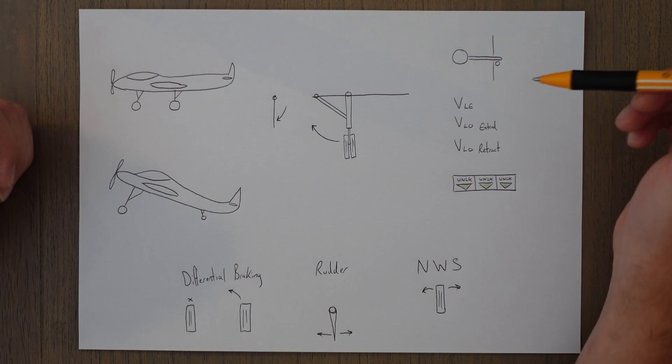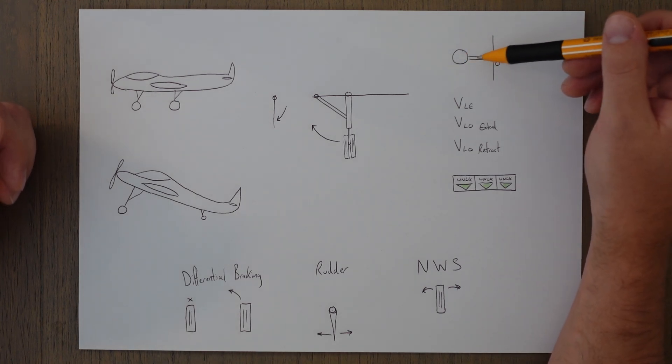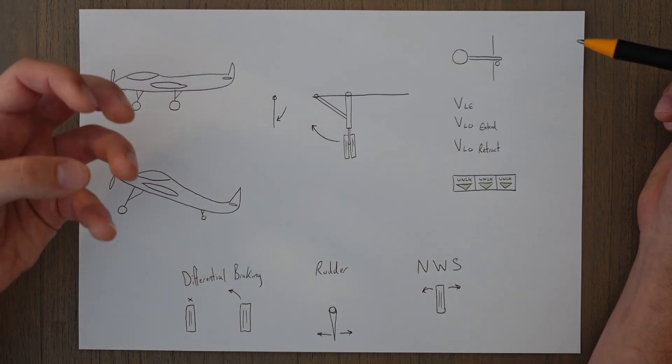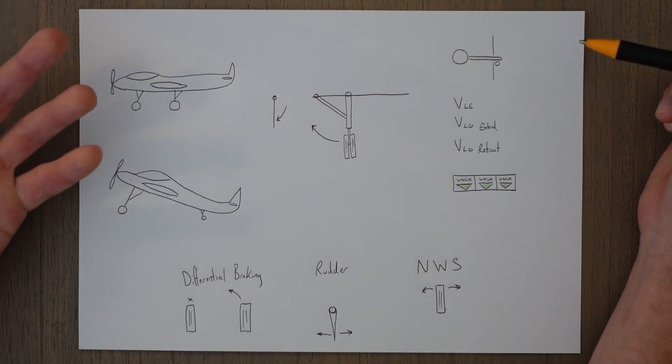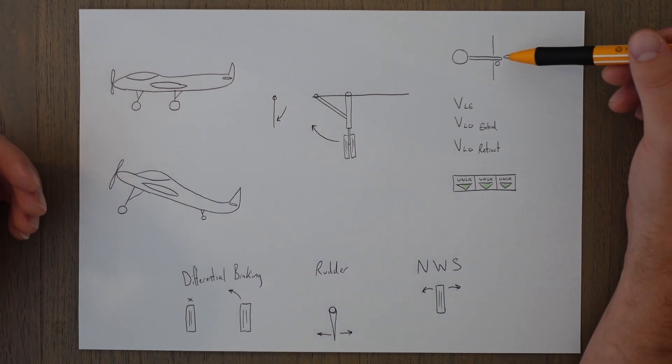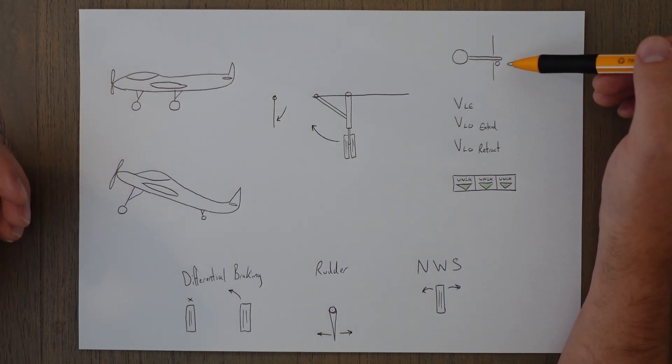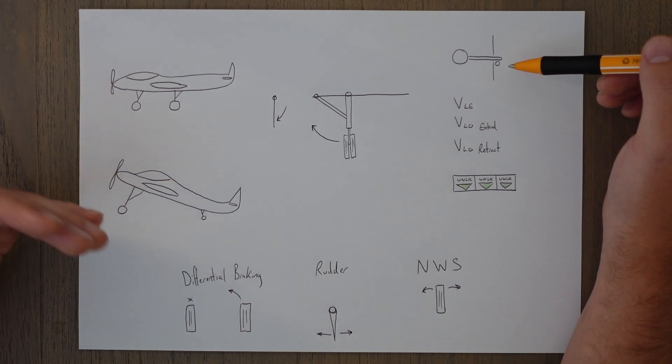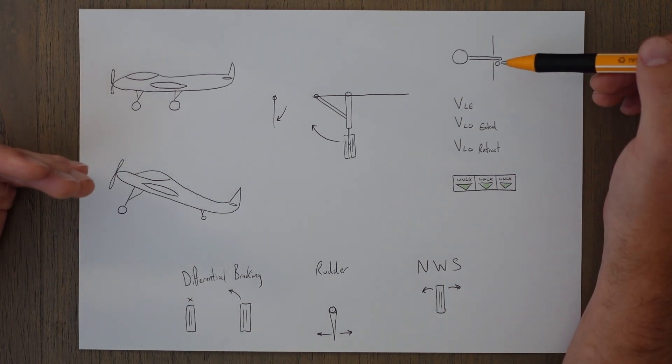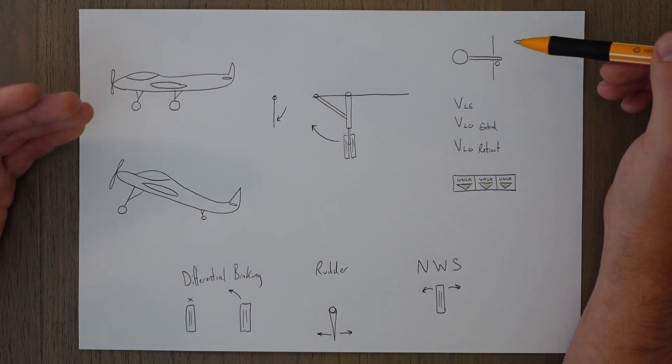In the cockpit, we'll usually see a lever with a little wheel on it—it's just a tactile thing, you grab the lever that looks like the wheel to operate the wheels. There's often a little locking pin that will use weight on wheel switches to activate and deactivate, and that means we can't inadvertently select the gear up when we're on the ground.